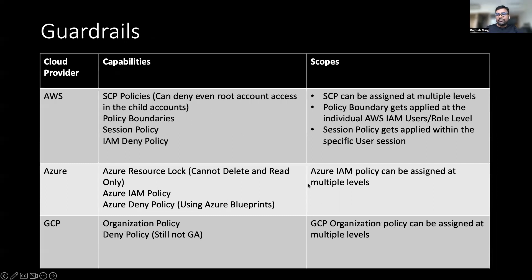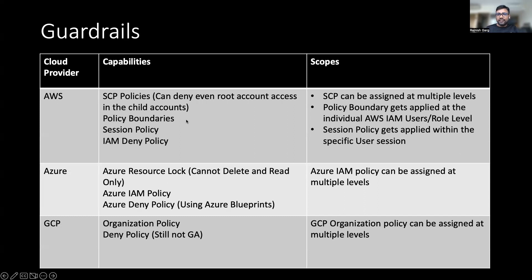Then comes the guardrail concept, which helps with governance across your entire organization. First, on AWS: there are quite a number of guardrails AWS provides. The first is the SCP policy, also called the organization policy, which can be applied at a specific AWS account, OU, or across the entire AWS organization. The second is the permission boundary, applied at the individual IAM user or role level. The third is the session policy, applied within a specific user session. And a deny policy can also be applied at the IAM level.